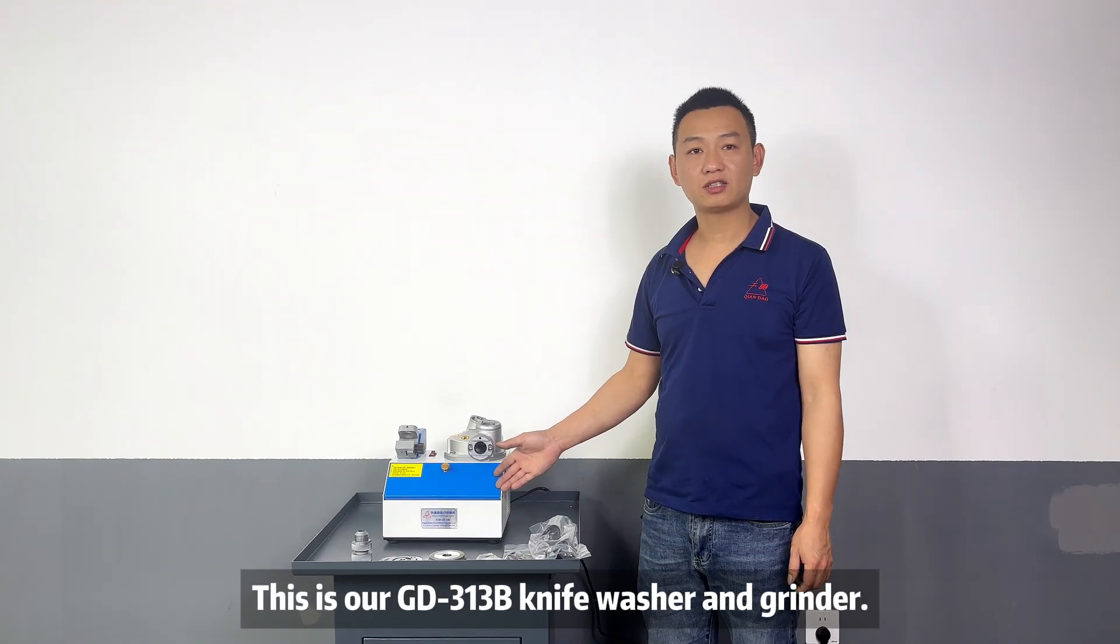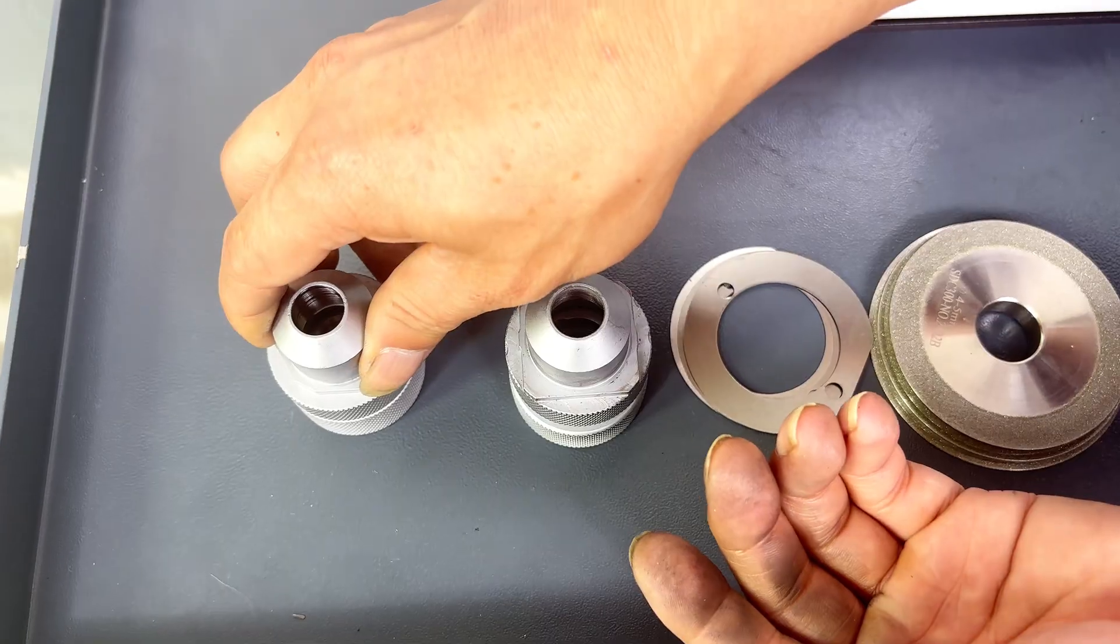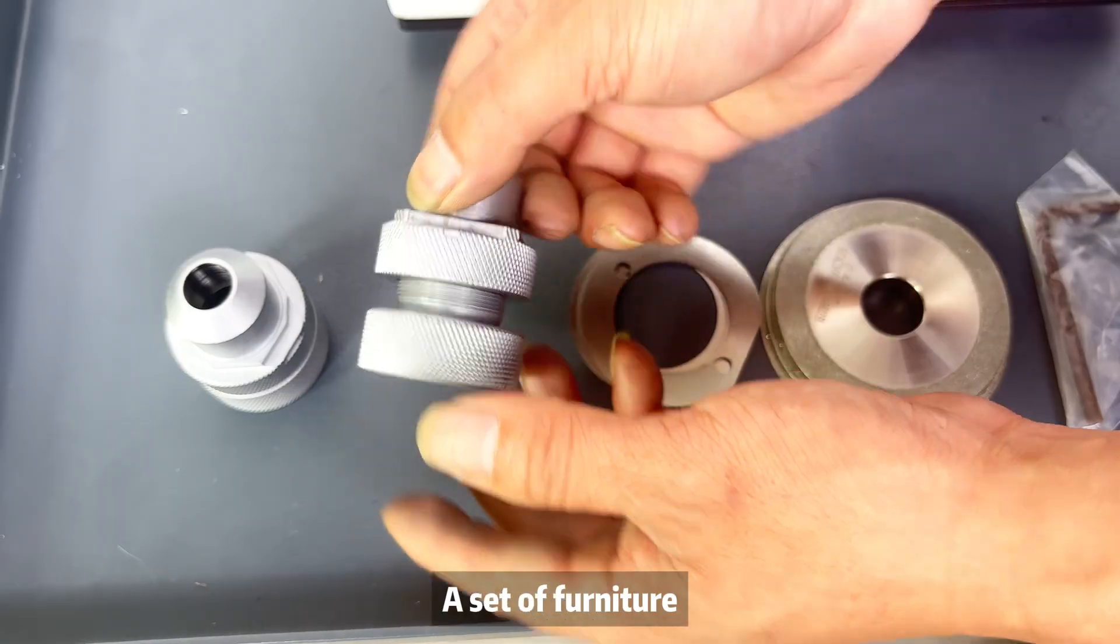This is LGD-313, the knife washer and grinder, a set of furniture with 3 equal parts, 3 pieces of ordinary gas pit.